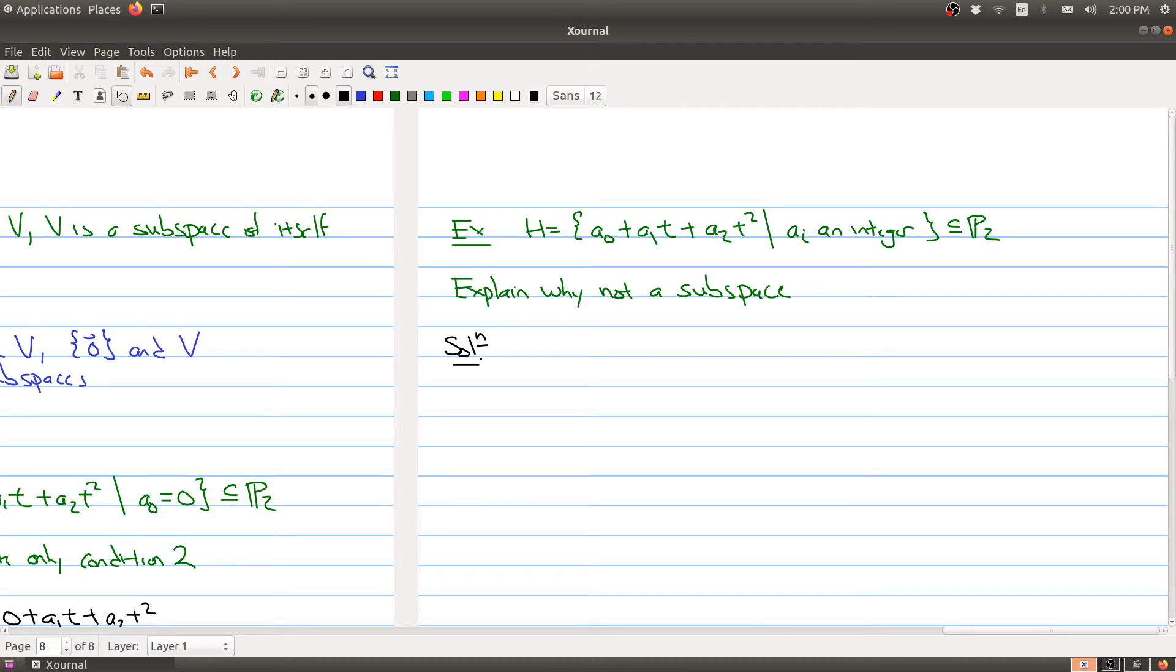And so here is the solution. It's because it actually fails one of the three conditions for a subspace. And in particular, H is not closed under scalar multiplication. So when you're trying to disprove something, all you have to do is give one example of where it would fail. So for example, the polynomial 1 plus t plus t squared is inside of H. And 1 half is inside of R.